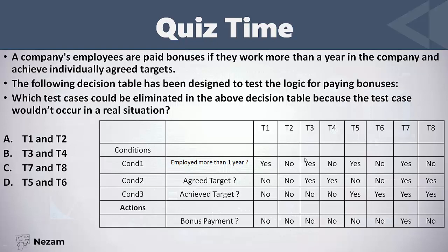Test case three: the person is employed more than one year, he agreed on a target but did not achieve it — so he will not get any bonus. Number four: a person who is not employed more than one year, he agreed on a target, and did not achieve it — he will not get a bonus. Some may think test case four is illogical, but it can happen — for example, we may have a talented employee who is not employed more than one year, but we add an exception and agree on a special target with him.